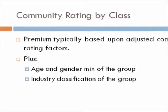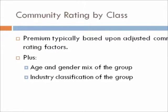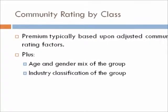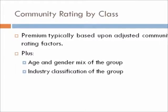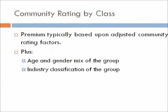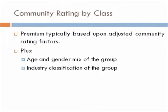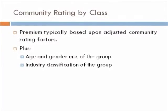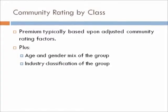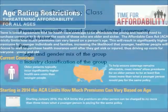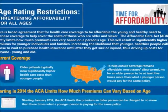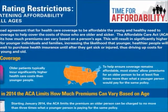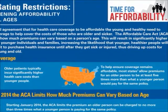Contract mix, contract size, and charging ratio can all be used to calculate the rate in adjusted community rating. Community rating by class expands on adjusted community rating — insurers take contract mix, contract size, and charging ratio into account, and additionally include age and gender mix of the group and industry classification.